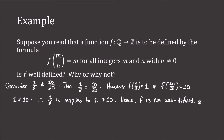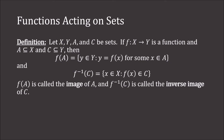Functions can also act on whole sets. If f maps X to Y and A is a subset of X, then f(A) is the set of all elements y in Y such that y = f(x) for some x in A — called the image of A. Similarly, f⁻¹(C) for C a subset of Y is called the inverse image of C.